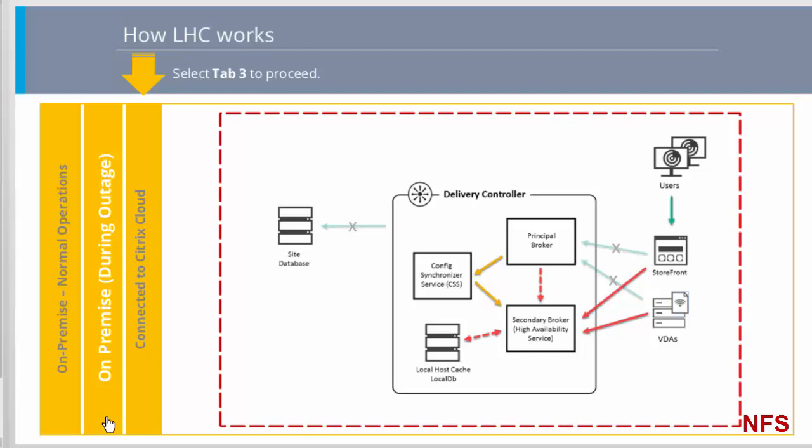There is a point to make now that we have completed the high-level view of the operation of LHC, and that is that in outage mode, only one secondary broker in a zone becomes active. So if there is more than one delivery controller, the active secondary broker is chosen through an election mechanism. This avoids inconsistencies, but can limit scalability.